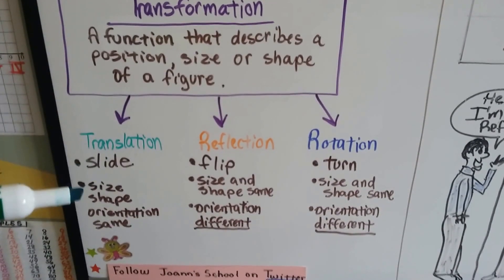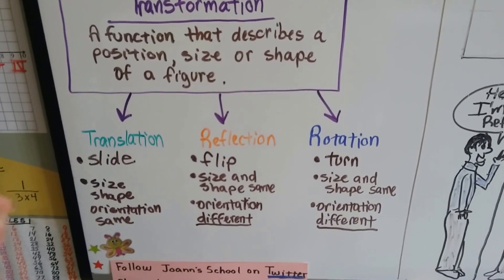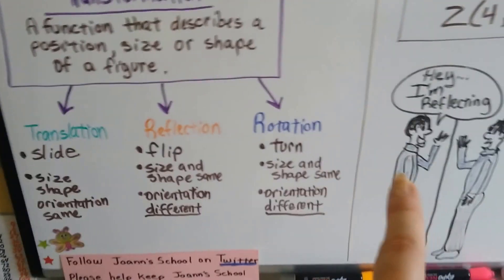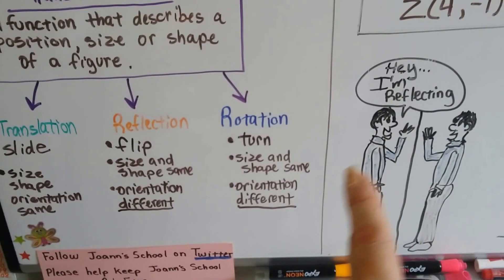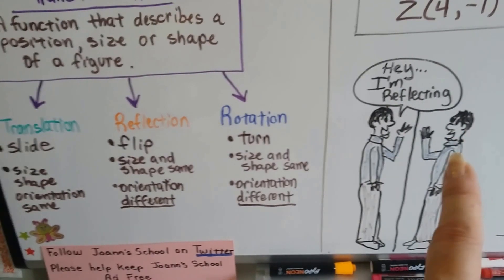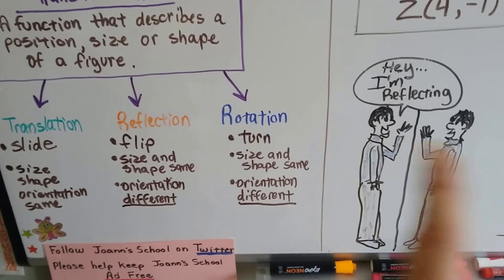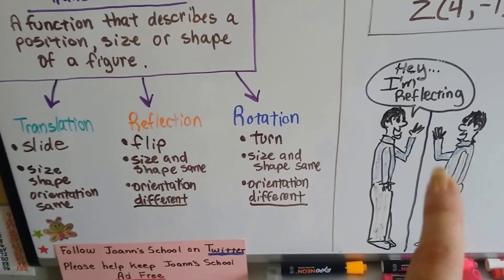A translation slides. The shape and size and orientation stayed the same. It just slides back and forth. A reflection flips, like these two guys. It's really one guy who's flipped over with a mirror image. And his shape and size is the same, but his orientation has changed. It's different.